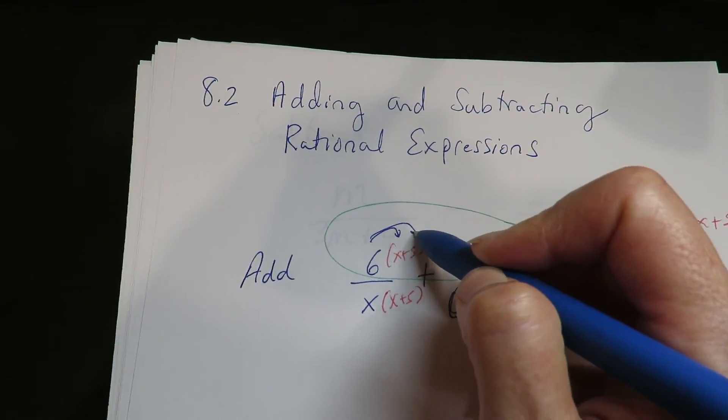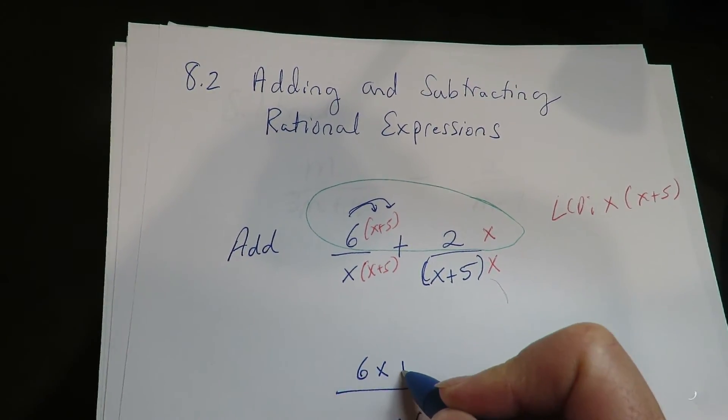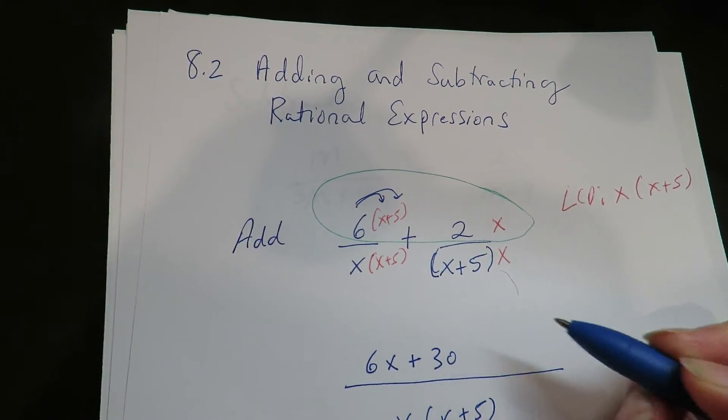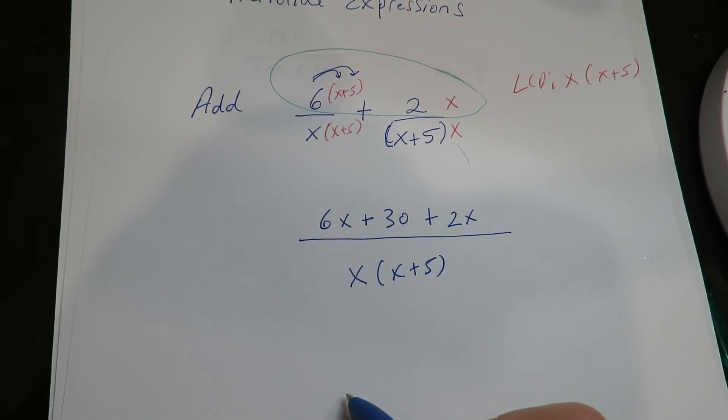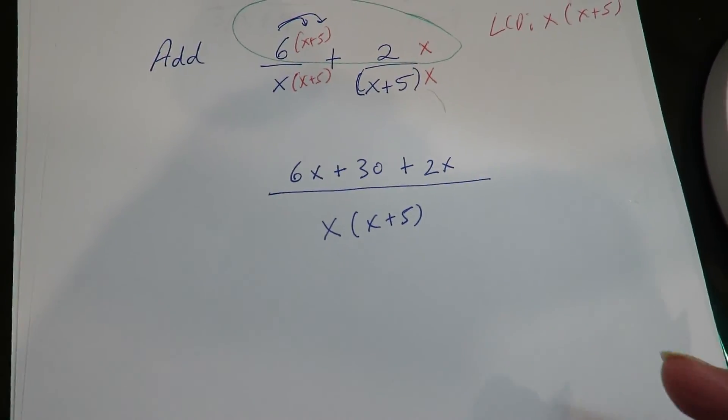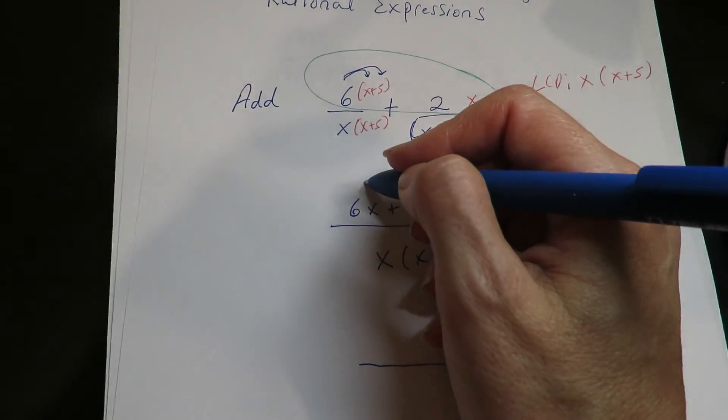Alright, so now I'm going to distribute the 6 here. Now you want to keep going because you're building the new numerator. I'm going to combine like terms.